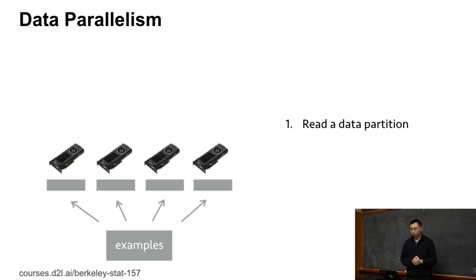Then we split the data into four parts. So each part we have 25 examples. And we send each part to each GPU memory, just a copy from CPU memory to GPU memory.